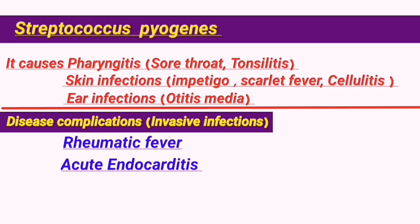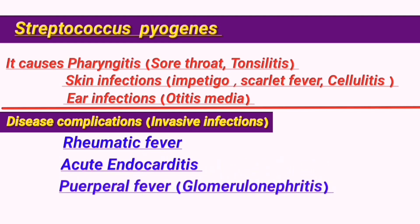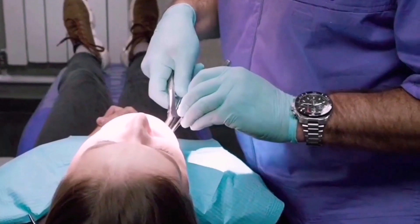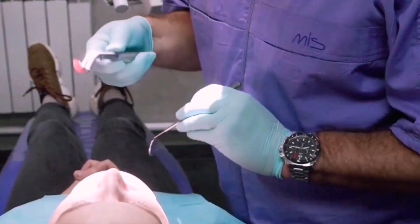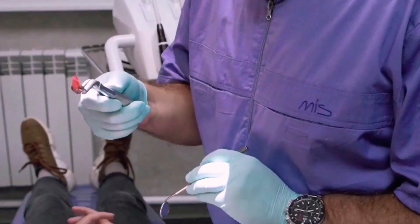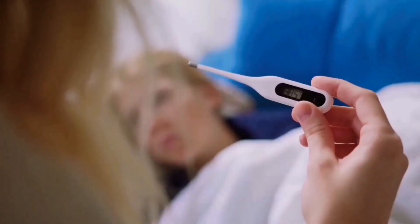The most dangerous complication of the S. pyogenes infection is puerperal fever, which occurs after childbirth due to the transmission of the streptococcal infection to the female genitals. This kind of infection is now very rare but still fatal if not treated quickly, as further complications can cause septicemia. The many diseases caused by this species eventually led to the decision of doctors to request tonsillectomy to avoid multiple infections of S. pyogenes.